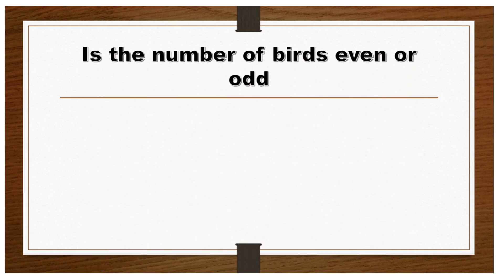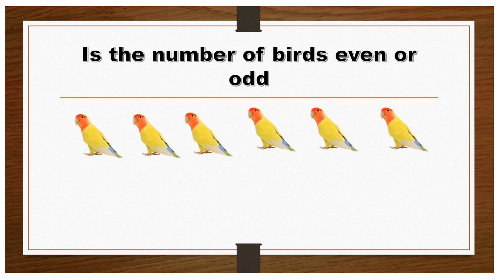Let's look at one more example. Is the number of birds even or odd? Let's count them. 1, 2, 3, 4, 5, 6. Number of birds equals even. This is because 6 is divisible by 2. 2 can divide 6 with no remainder.